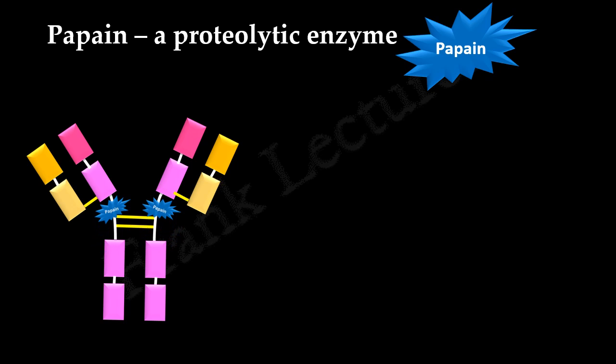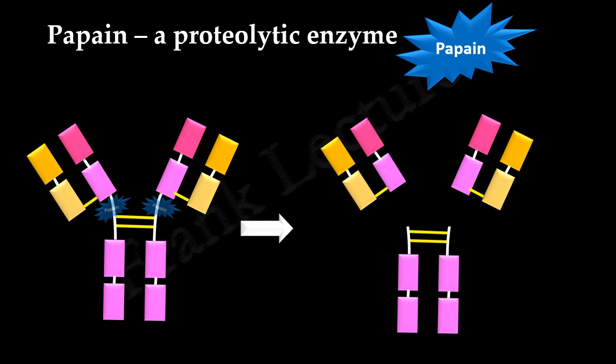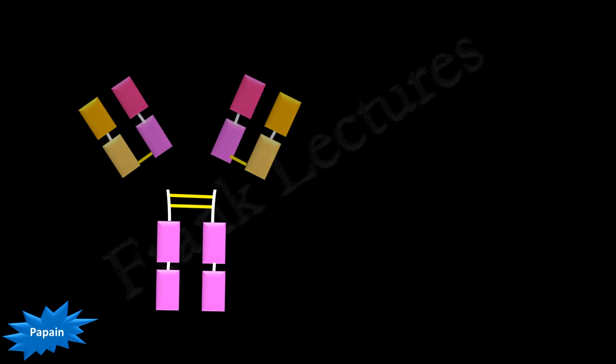When the antibody is treated with enzyme papain, the antibody splits into three fragments of about equal size. It was found that enzyme papain cuts the antibody molecule just before the two disulfide bonds which link the heavy chains together — that is, at the amino terminal side of the interchain disulfide bond that links the two heavy chains.